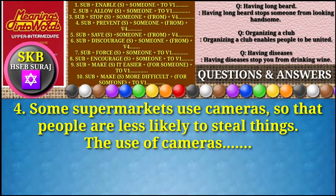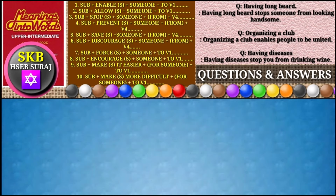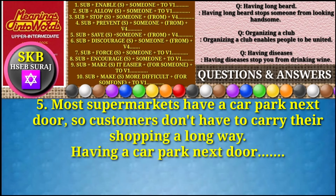Question number four: 'Some supermarkets use cameras so that people are less likely to steal things.' Answer using 'the use of cameras.' Answer: The use of cameras makes it more difficult for people to steal things.